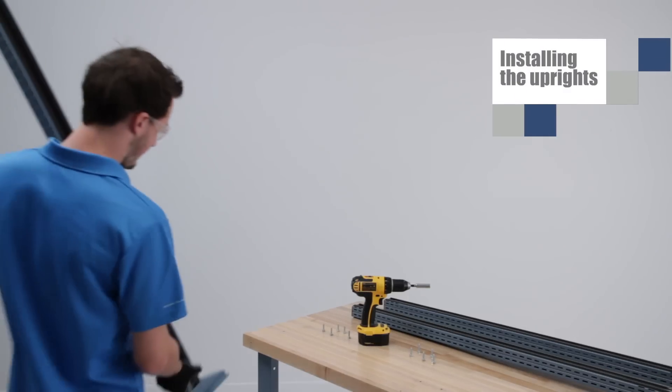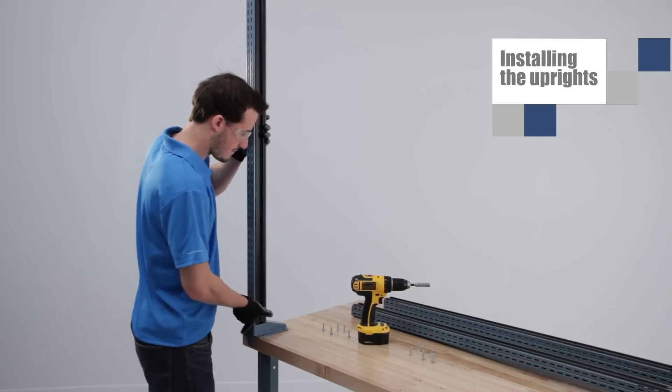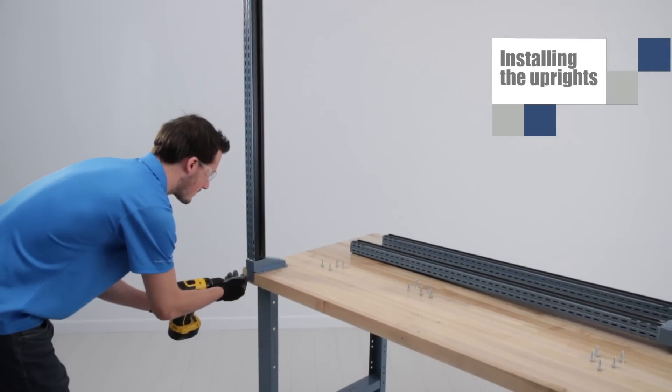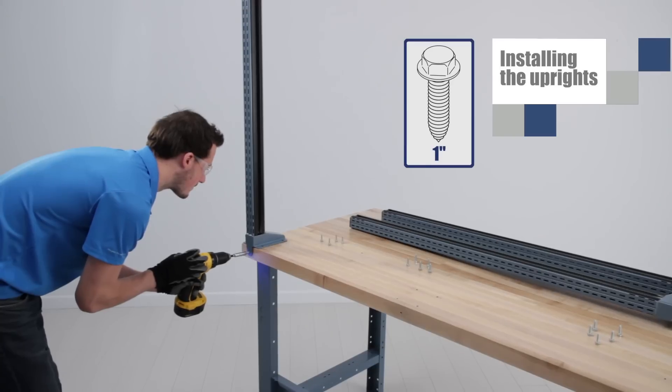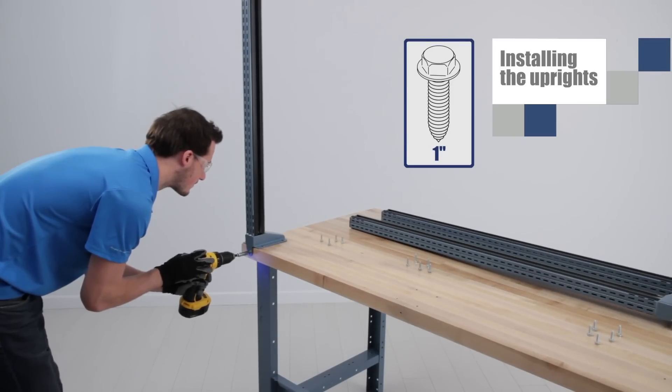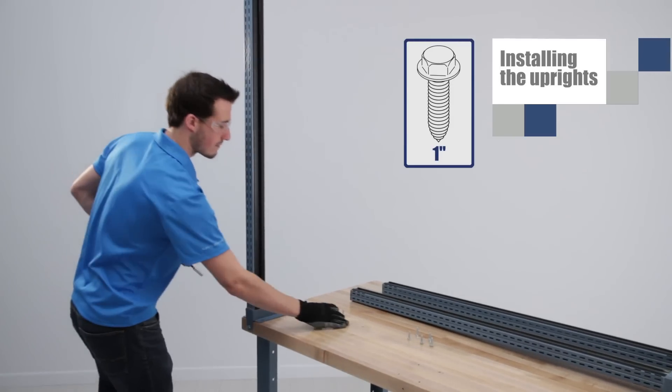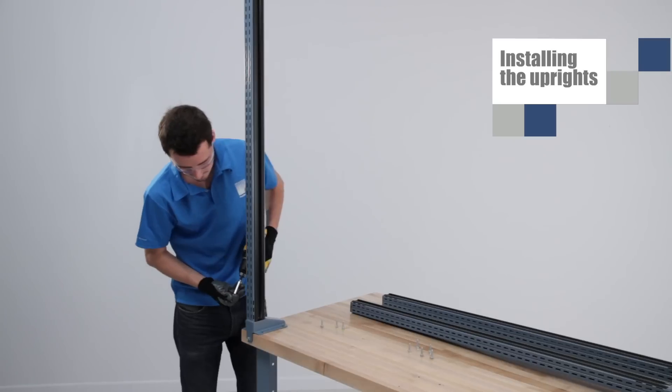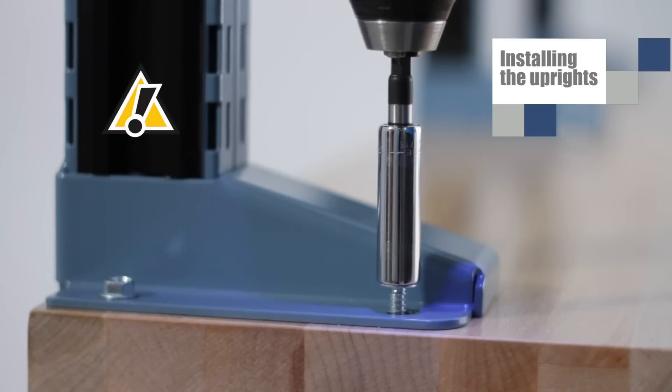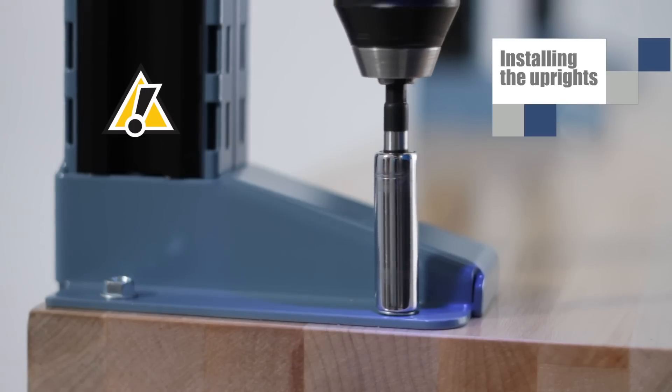The next step is to attach the uprights to the work surface. Use the 1 inch screws for all types of work surfaces, except if you are using the WM14 reinforcers directly under the uprights. Make sure you don't over tighten. You don't want to strip your hardware.